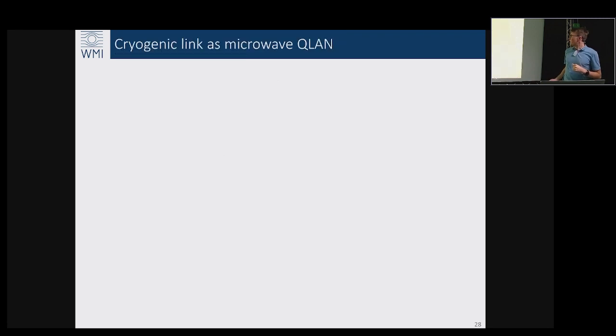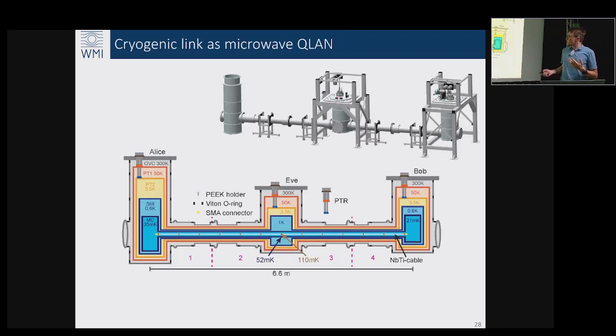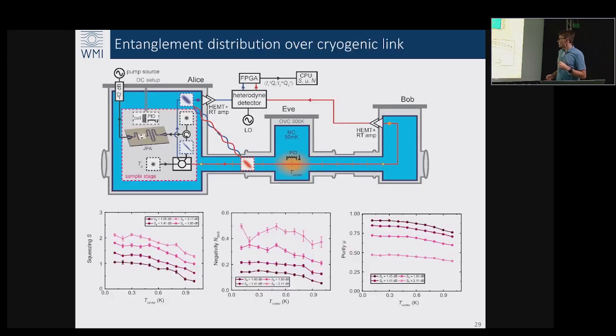What we can actually start doing is try to do teleportation across the link now. This is the technical drawing of our link with lots of technical details. The important part is that we have this long superconducting cable which is cooled to the temperatures of 100 millikelvin or sometimes a bit above or below, and we have a possibility to heat it up in the center.